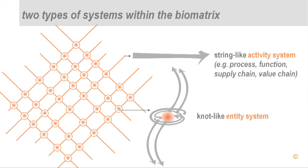The knot-like systems are called entity systems. These entity systems consist of bundles of activity systems — they are interfacing like a knot in a particular structure, literally a field of interacting activity systems. Examples of entity systems would be a planet, society, an organization, a person, a cell, an atom, a molecule, amongst others. So activity systems and entity systems interact and are connected within the web of life of the biometrics.